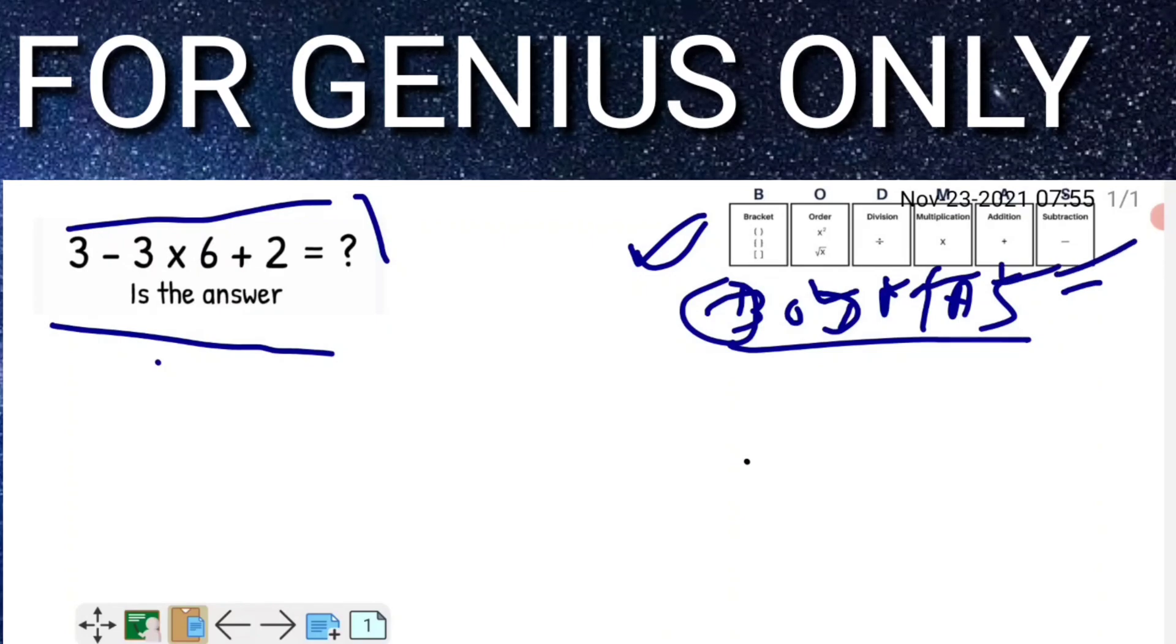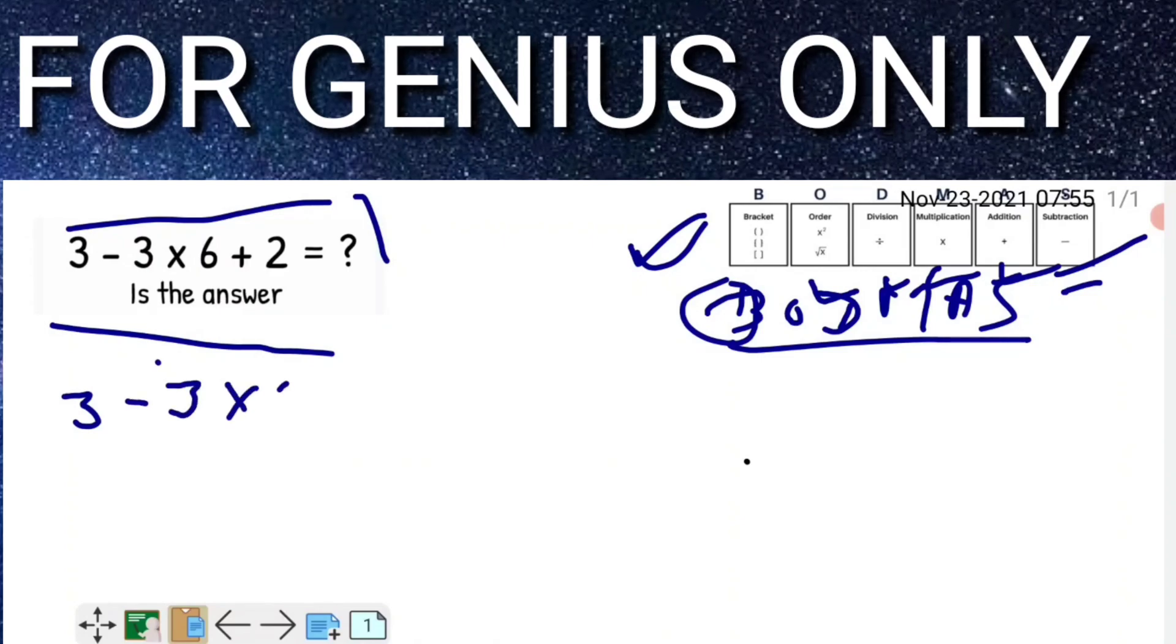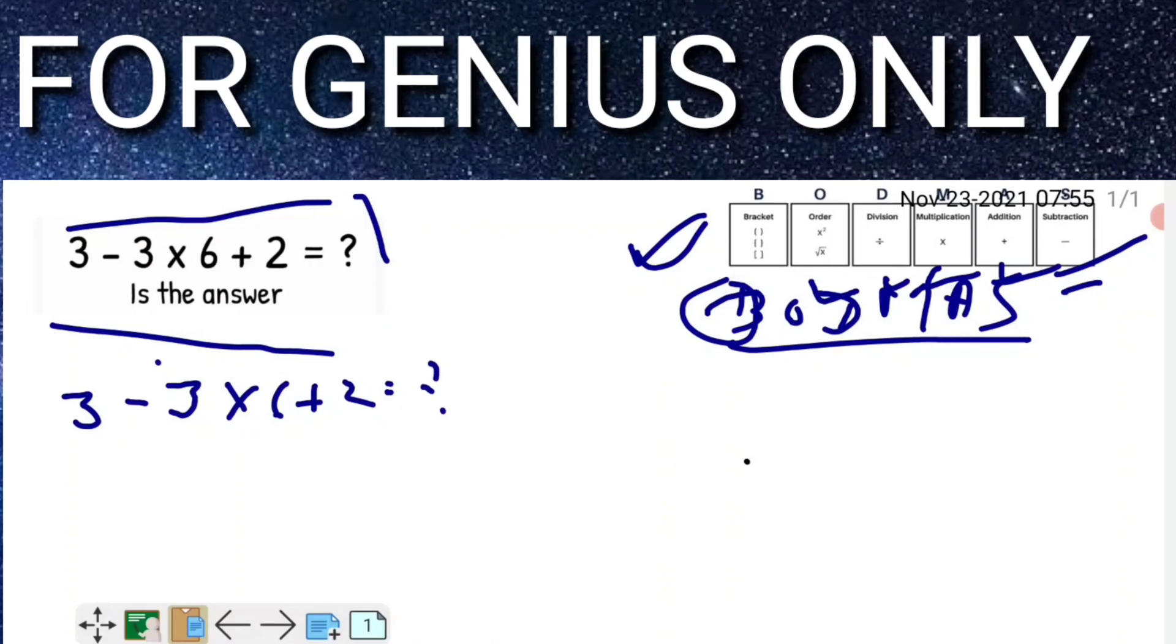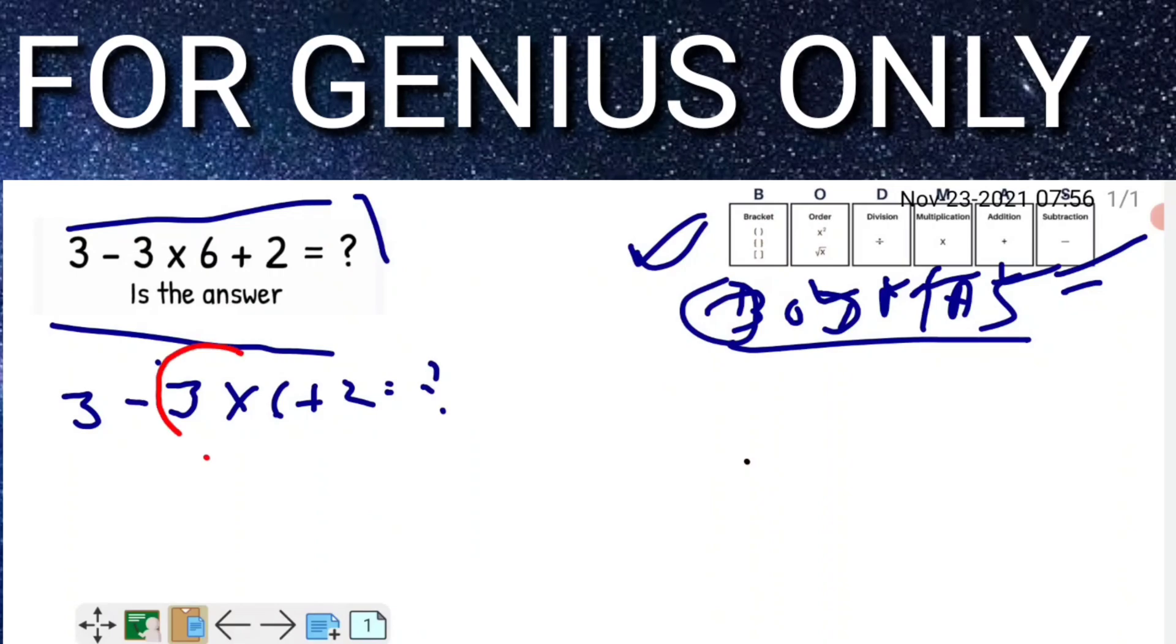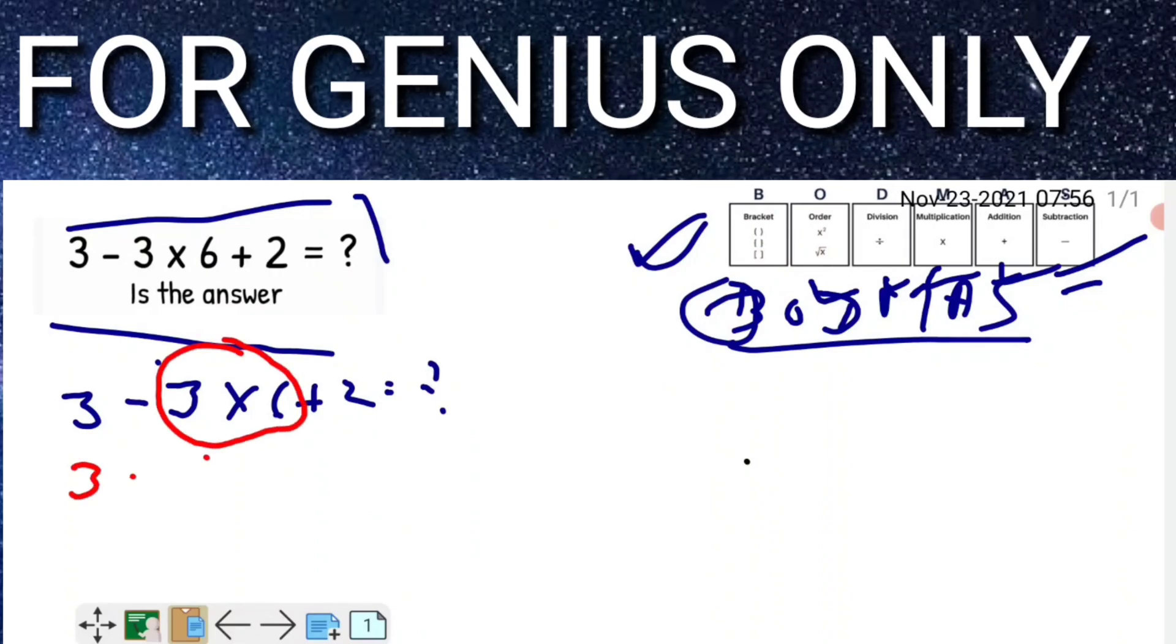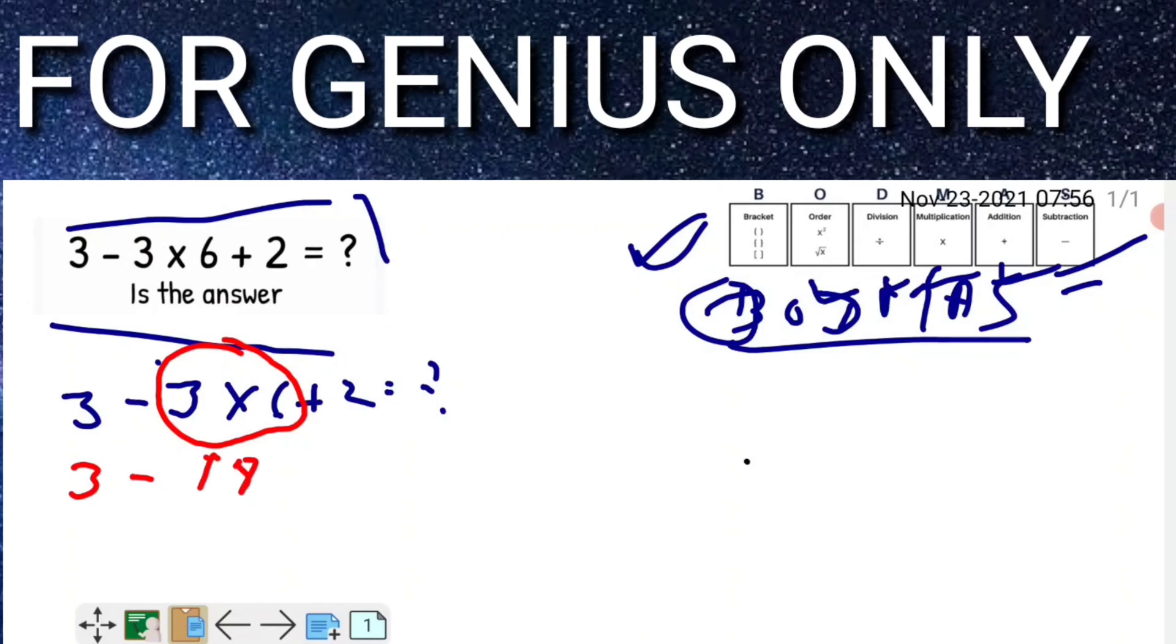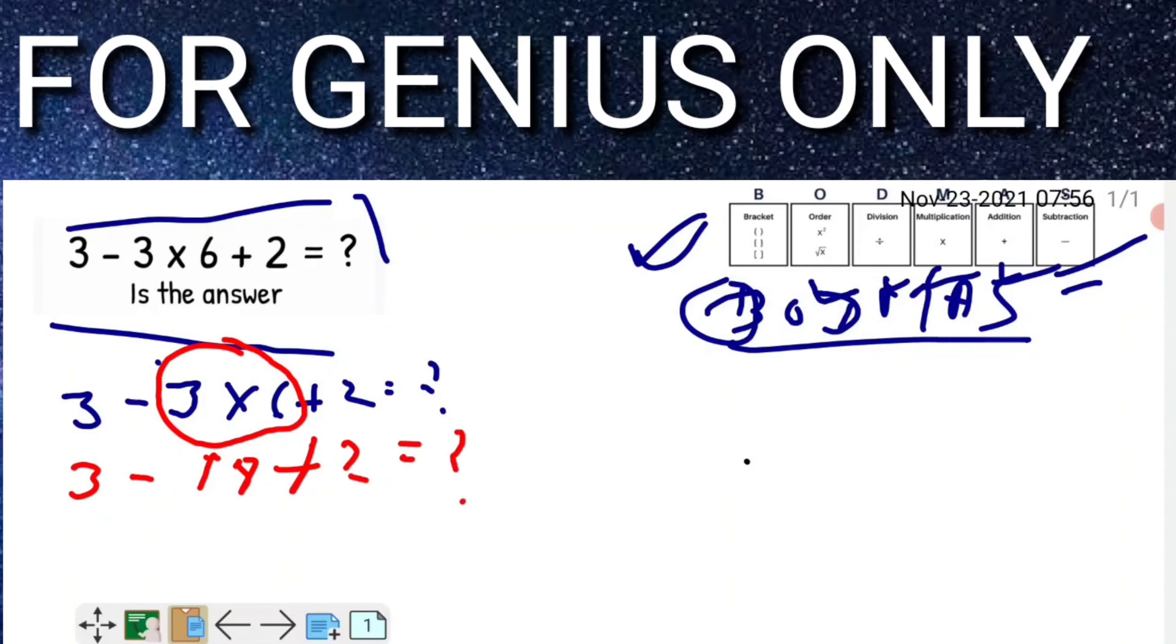So what we will do? See friends: 3 - 3 × 6 + 2. As both are mentioned, what we have to do first is calculate these two things because first we have to do multiply. That means 3 - (3 × 6 is 18), and after that + 2.